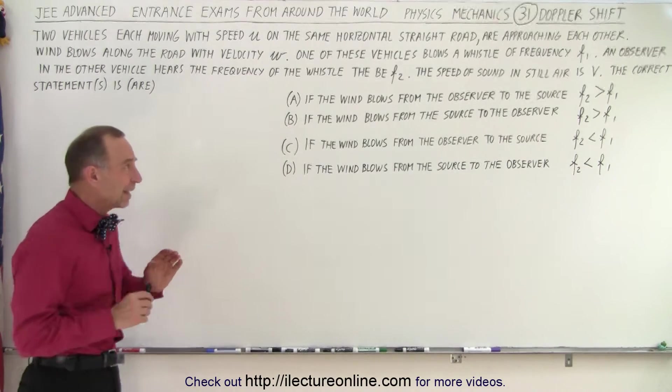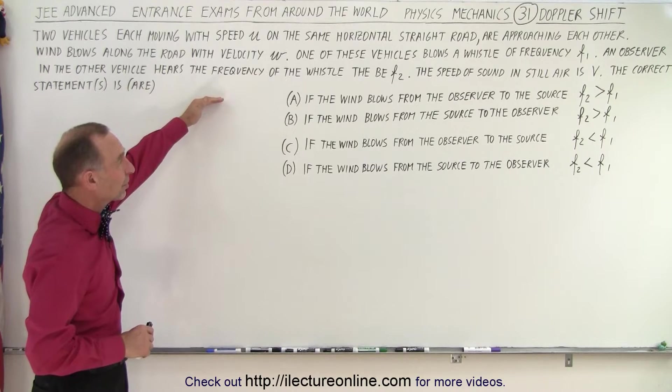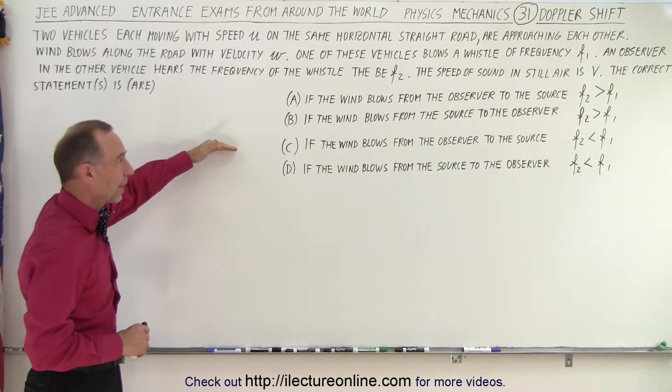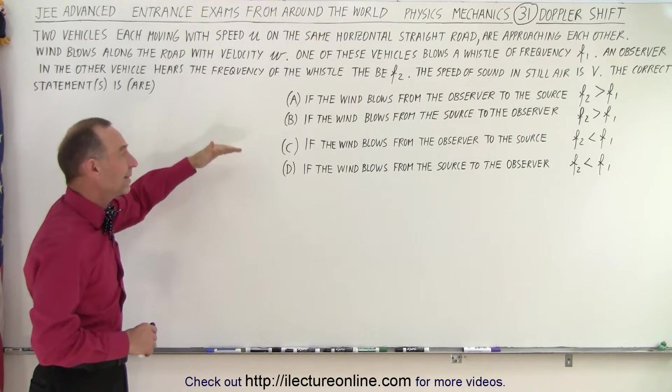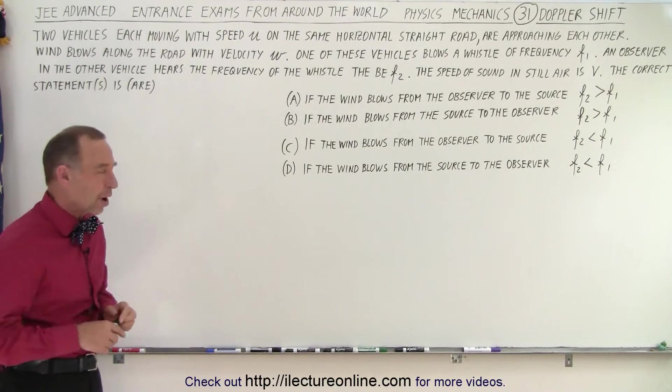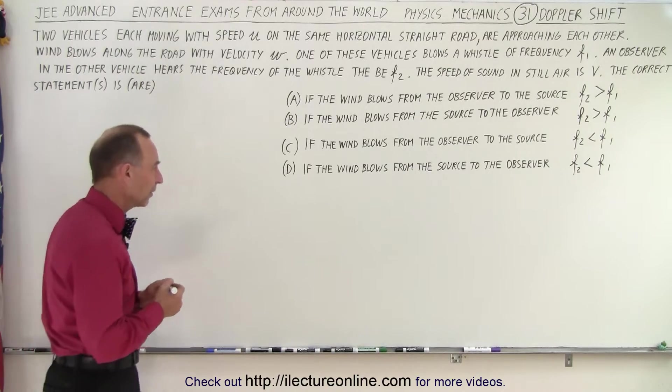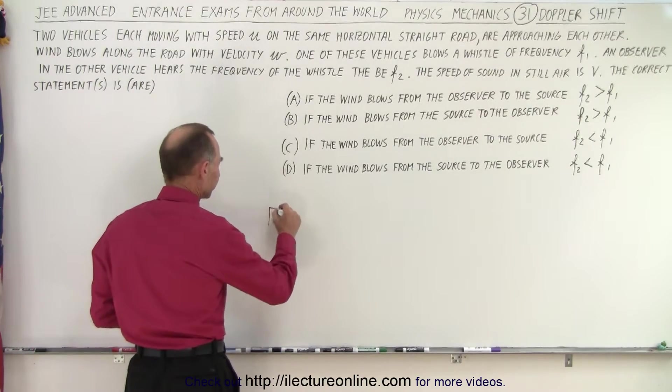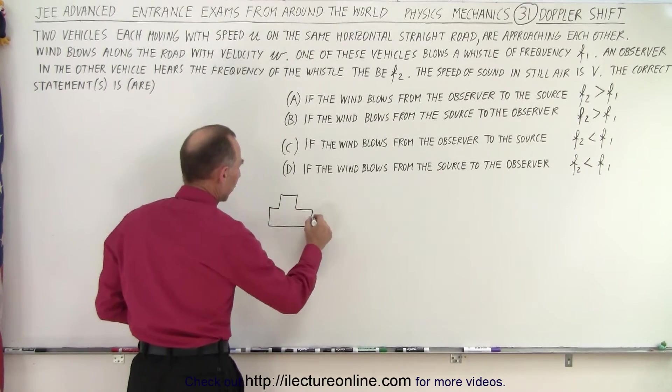So you can see that if A is correct then C cannot be correct, and if B is correct then D cannot be correct or vice versa. Alright, so first let's make a little drawing to get a feel of what this is about. So we have two vehicles.